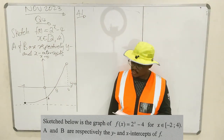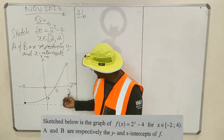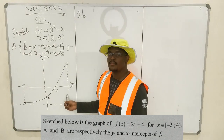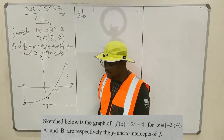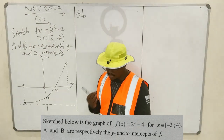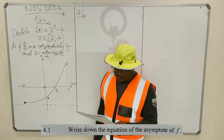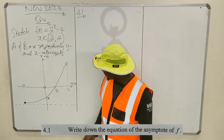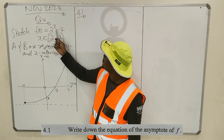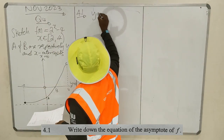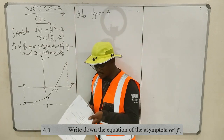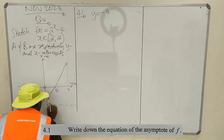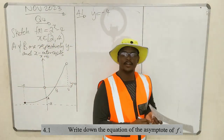4.1: Write down the equation of the asymptote of f. If you look at this graph, it's defined from x equal to minus 4, and 4 is not included — it's a half-open interval. f has one asymptote, the horizontal asymptote, and that asymptote is y equals minus 4.